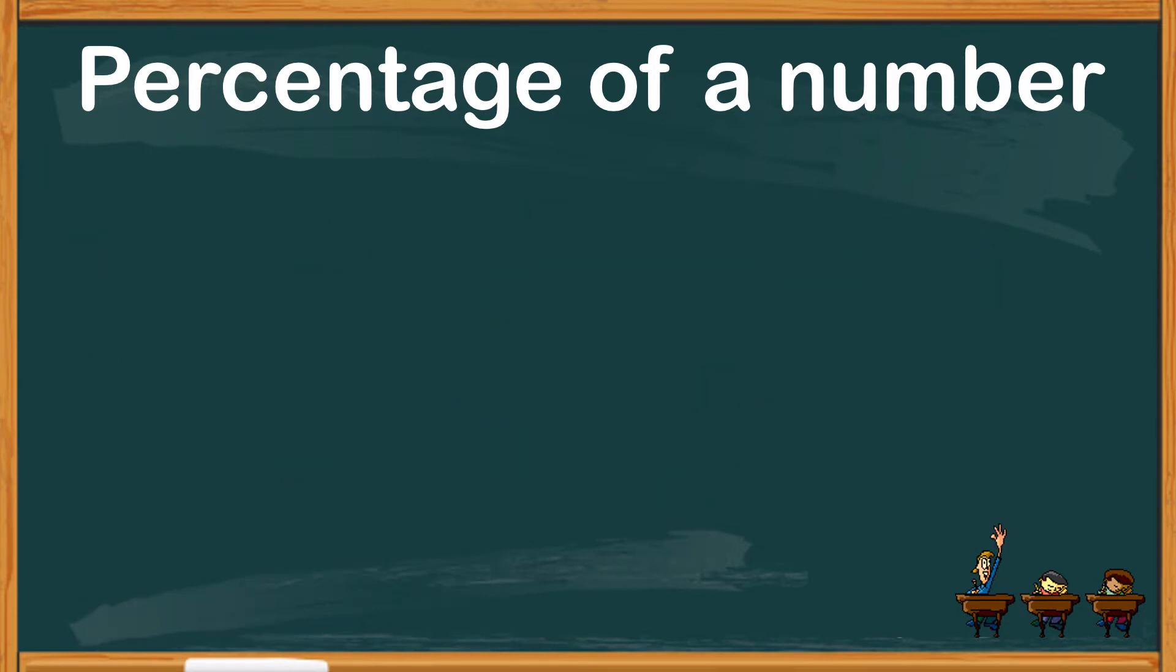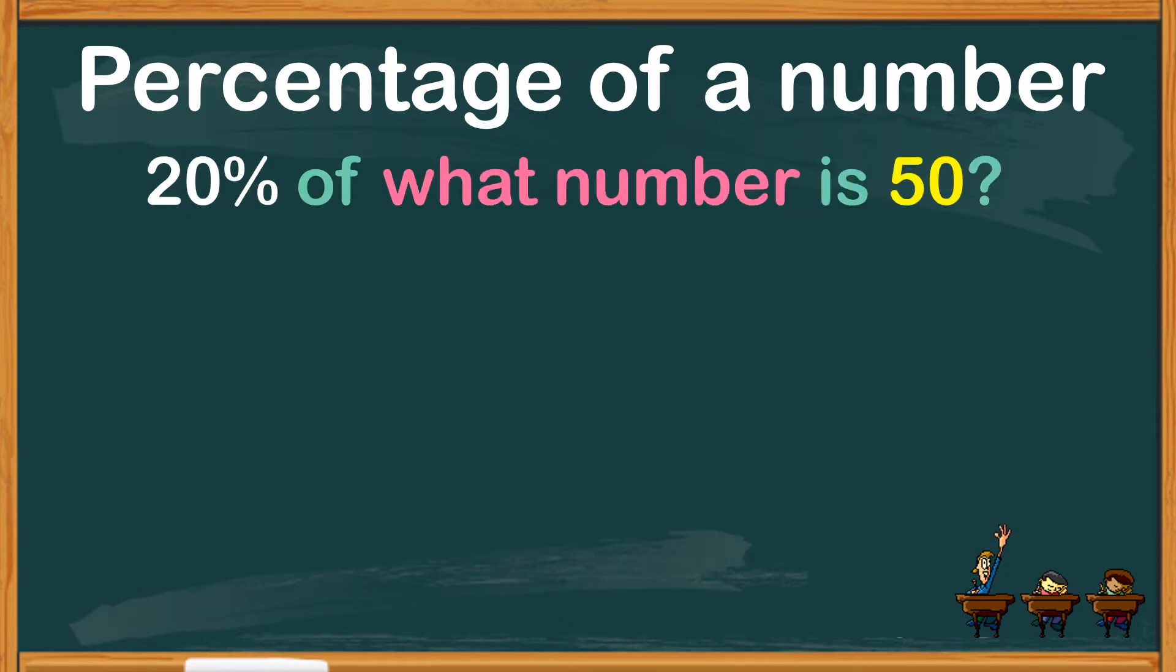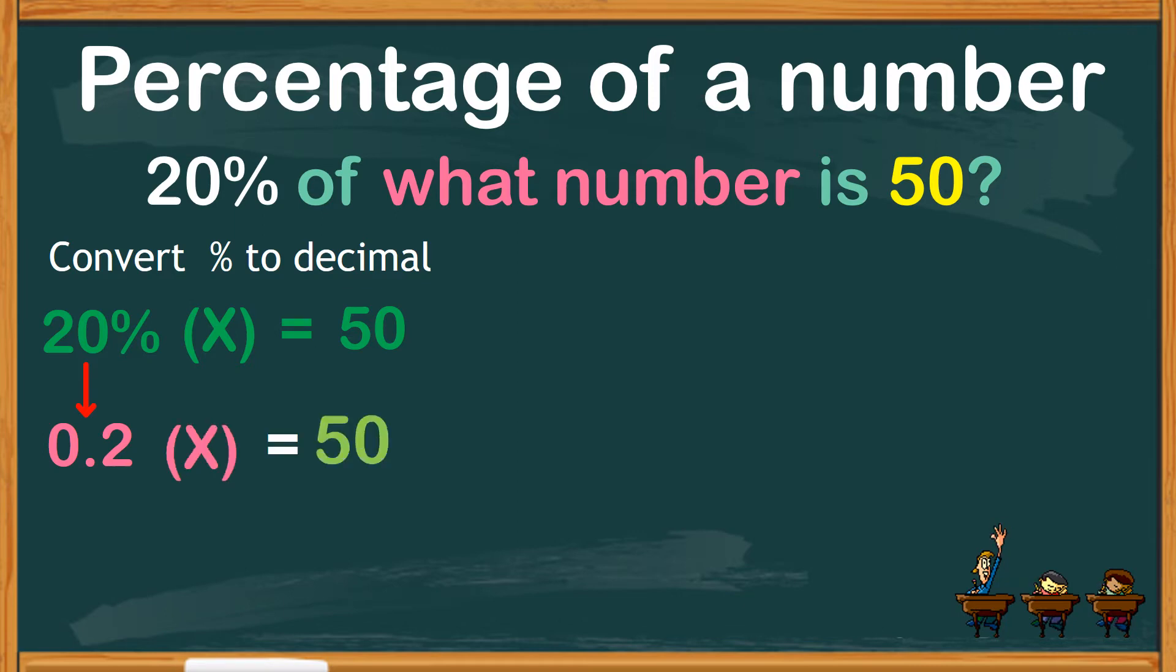Here is another question pattern. 20% of what number is 50? Let's write the question in a number sentence to clearly understand what the number is asking for. So 20% of an unknown number represented by x is equals to 50.